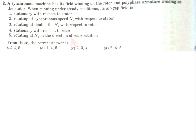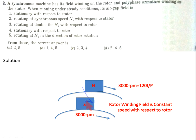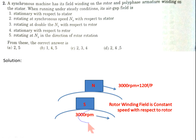Now come to question number 2. A synchronous machine has its field winding on the rotor and polyphase armature winding on the stator. When running under steady state condition, its air gap field behavior is given by statements A through D. Now the rotating magnetic field is on the stator part running at 3,000 rpm for a two-pole machine, and the rotor magnetic field is constant with respect to the rotor due to DC source, with the rotor also rotating at 3,000 rpm.